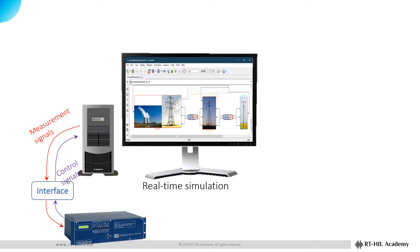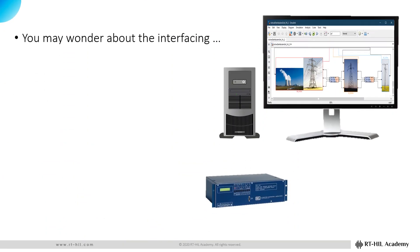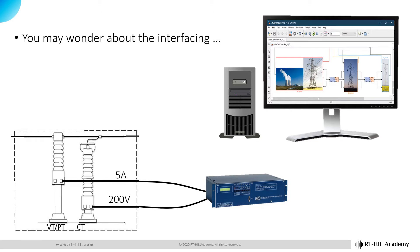Because the real-time simulation is interfaced with a hardware, the whole setup is called a real-time hardware in the loop, or RT-HIL, simulation. You may wonder how the simulation is interfaced with the actual device. Keep in mind that a commercial-grade device is designed to interface with other actual devices in the field. For instance, the device shown in this example expects to receive electric current measurements in the level of a few amperes, and voltage measurements in the level of a few hundred volts, from current and voltage transformers in the field.